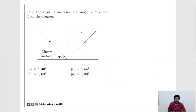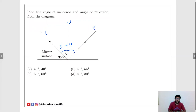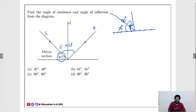Find the angle of incidence and angle of reflection from the diagram. The incident ray, normal ray, and reflected ray are given. We need to find angle I and angle R. The angle between the normal and the surface of the mirror is 90 degrees. The diagram gives 35 degrees between the incident ray and the mirror surface. So angle I = 90 − 35 = 55 degrees. By the law of reflection, angle R = 55 degrees as well. Answer is B: 55° and 55°.